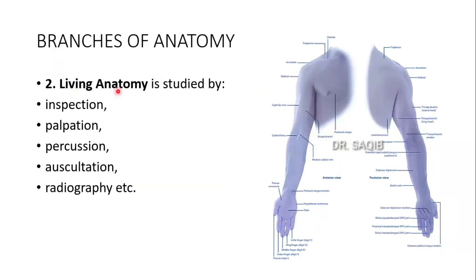The second branch is living anatomy. It is studied by inspection, palpation, percussion, auscultation, and radiography. Here you can see the parts of the upper limb and the shoulder region, the chest — where we can do inspection and palpation. Over the chest we perform auscultation and we can take radiography. We will show a radiograph very soon.